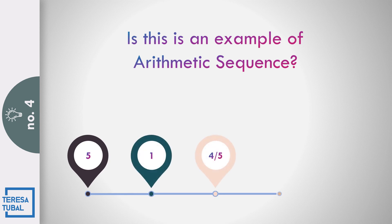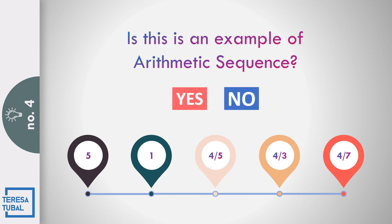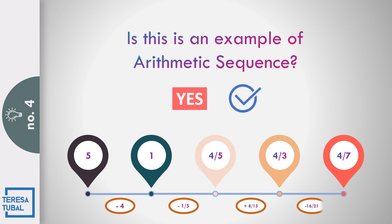Question number four: Is this an example of arithmetic sequence? 5, 1, 4 over 5, 4 over 3, and 4 over 7? No. Correct. Because there is no common difference.